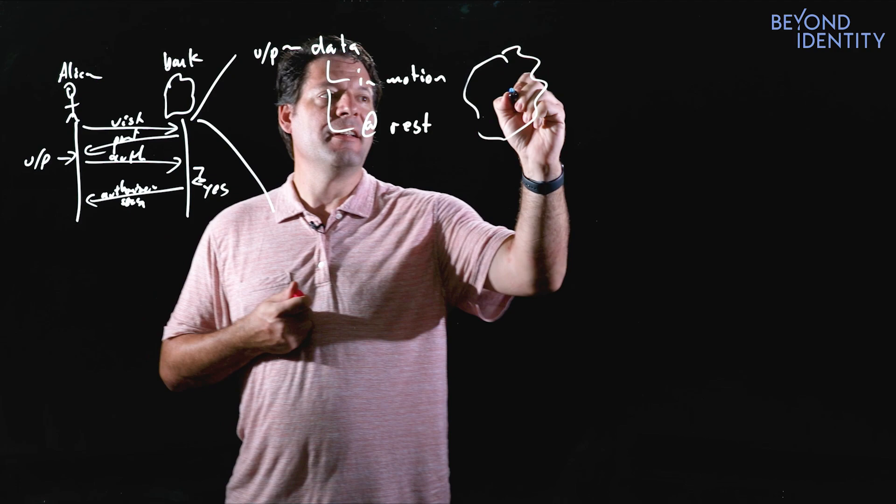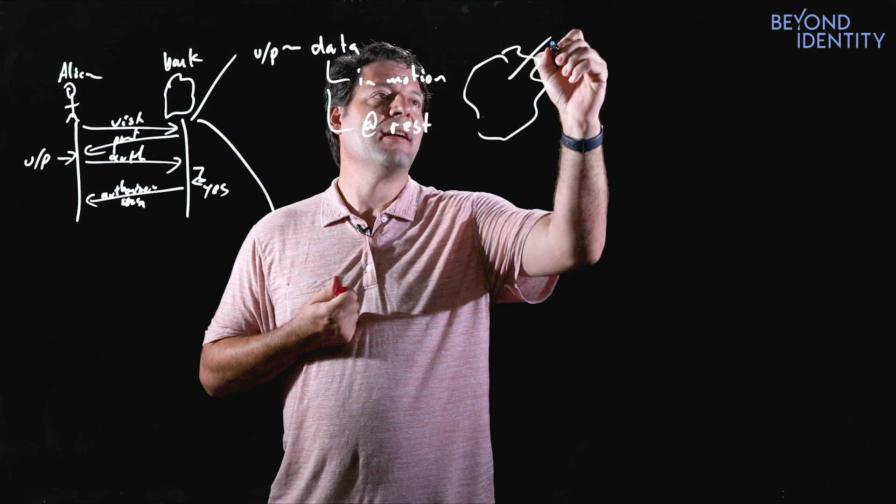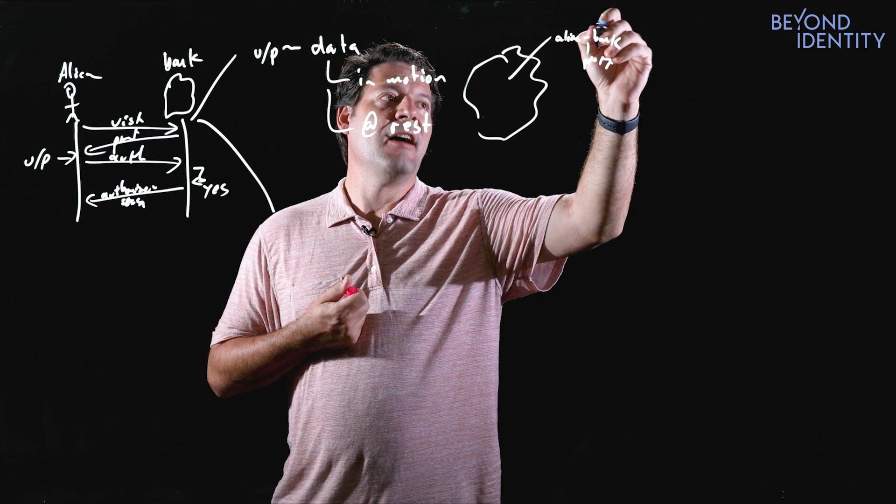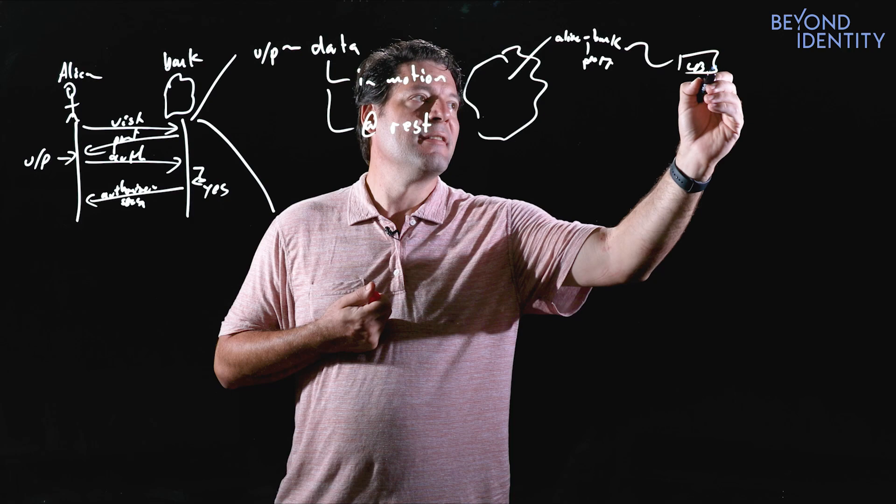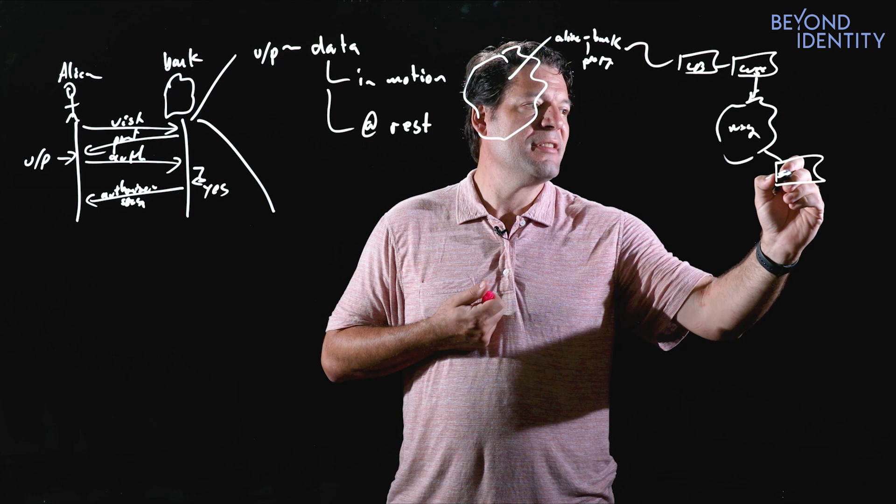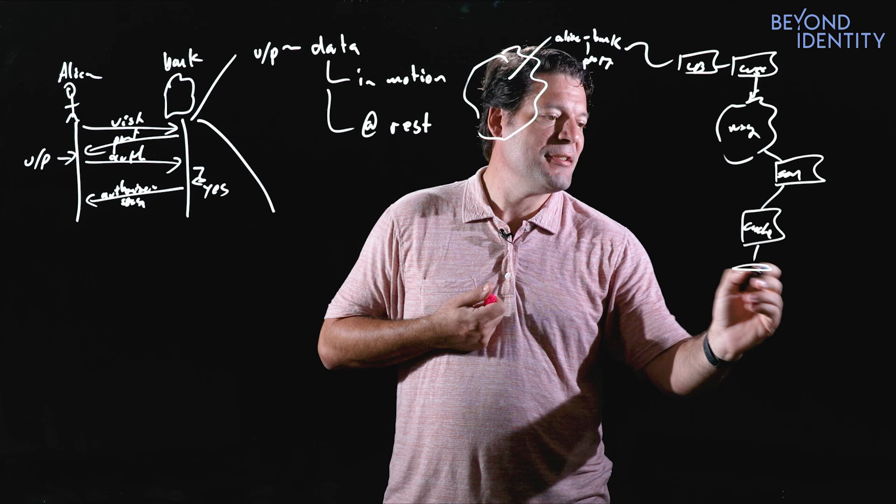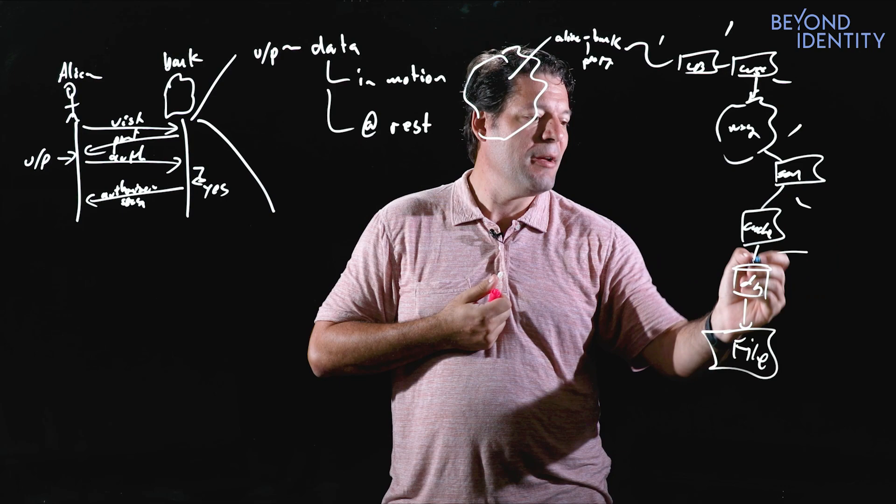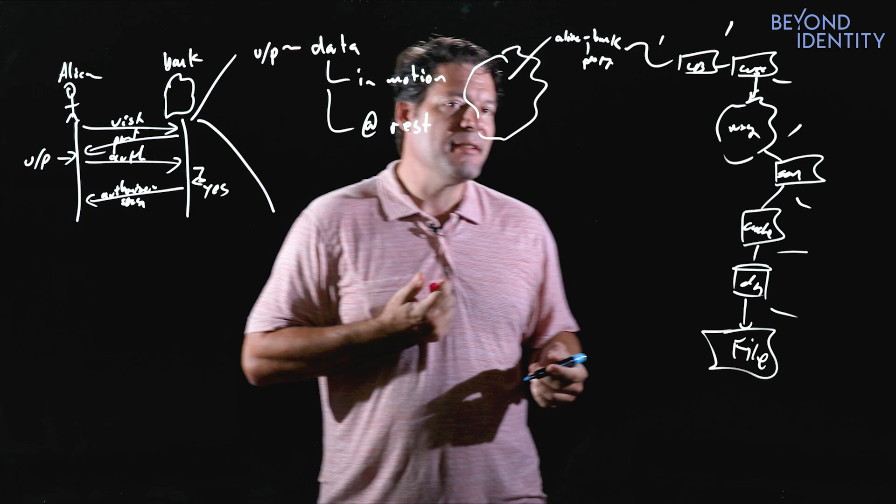The surface area in motion is about all the individual connections. In this example, we're showing the connection from Alice to the bank, but in the real world there are intermediate proxy servers, load balancers, web servers, message buses, additional services, caches, databases, and file systems. Each of these connections is an in-motion thing we have to worry about, and each device is an at-rest location we have to worry about securing.